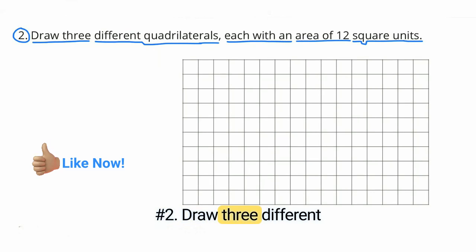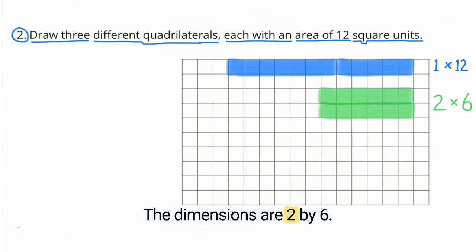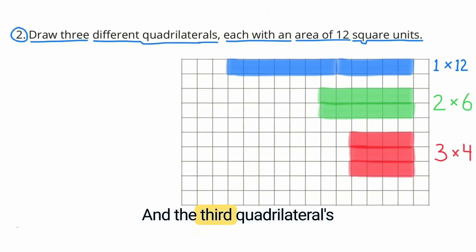Draw three different quadrilaterals, each with an area of 12 square units. In blue, I've drawn a quadrilateral with an area of 12 square units, and its dimensions are 1 by 12. In green, the dimensions are 2 by 6, and the third quadrilateral's dimensions are 3 by 4.